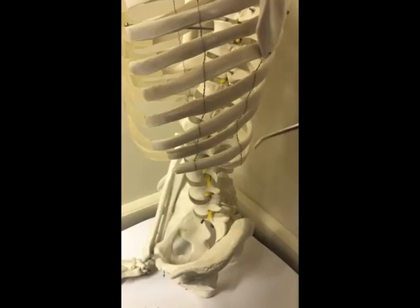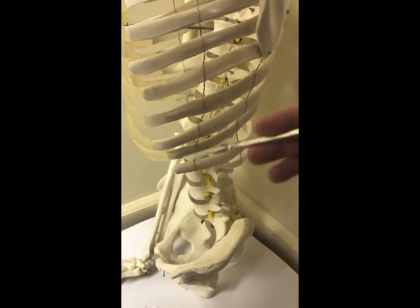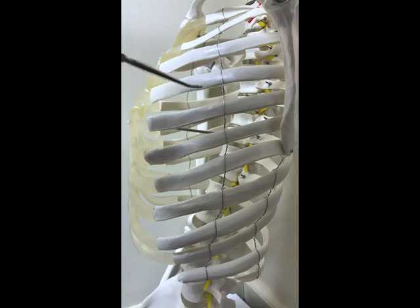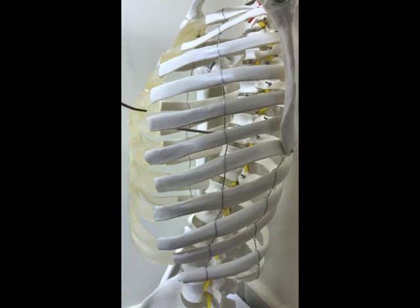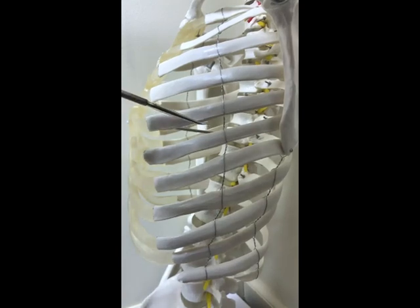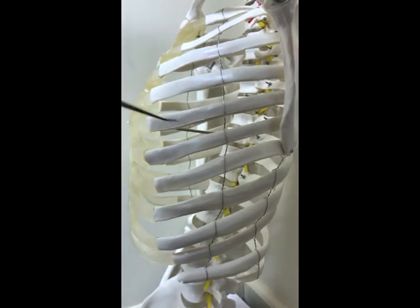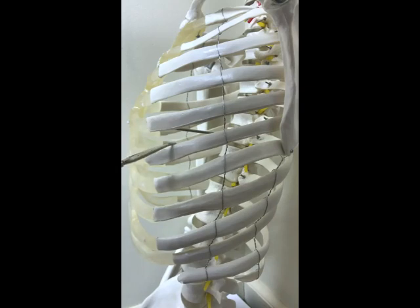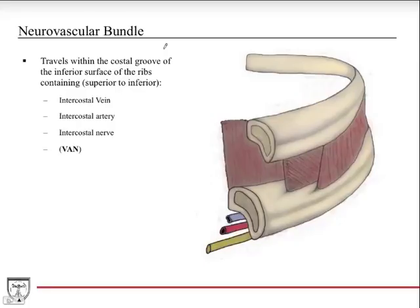The last two ribs, the 11th and 12th, are the floating ribs. They don't articulate with the sternum and have no cartilaginous insertion points — they just float out on their own. Also from this side view is what's called the costal groove — a depression in the inferior surface of the rib where the neurovascular structures travel: the intercostal arteries, veins, and nerves. This serves as a protection for these important structures. For thoracentesis — sticking a needle into the thoracic cage to drain fluid or blood — you don't want to go below the rib because you risk hitting the artery or nerve. You want to go above the rib.